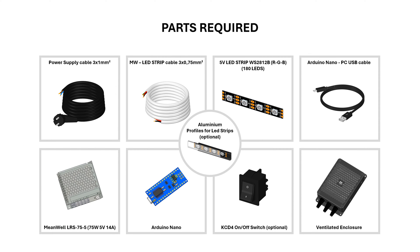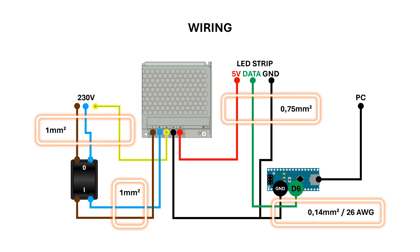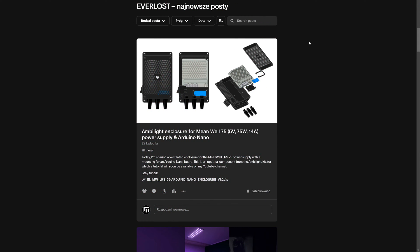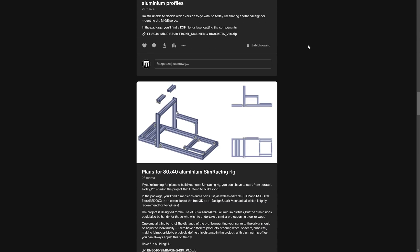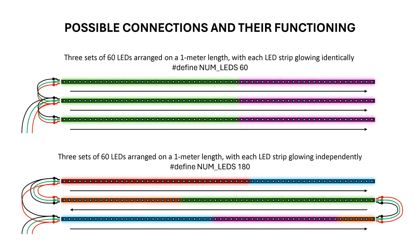Let's start with building the device. The part list shown is selected for lighting using strips with 180 LEDs. If you decide to build an identical lamp, you can safely use these components. The ventilated enclosure, as well as many other project files, are available to my Patreon supporters. Here we can see two possible ways to connect the strips, as well as Arduino code where we specify the number of illuminated LEDs. I'm using the first solution displayed at the top.